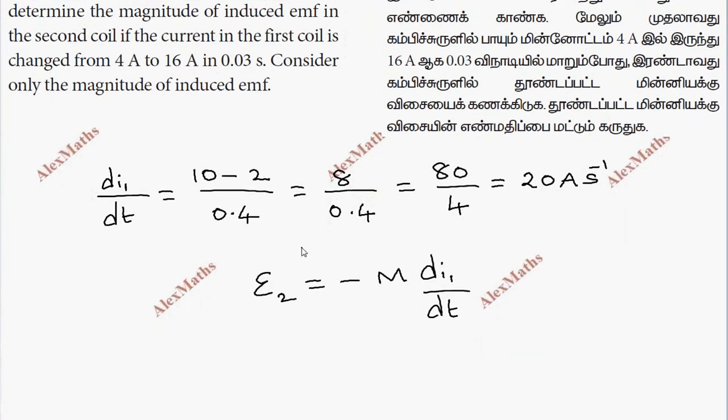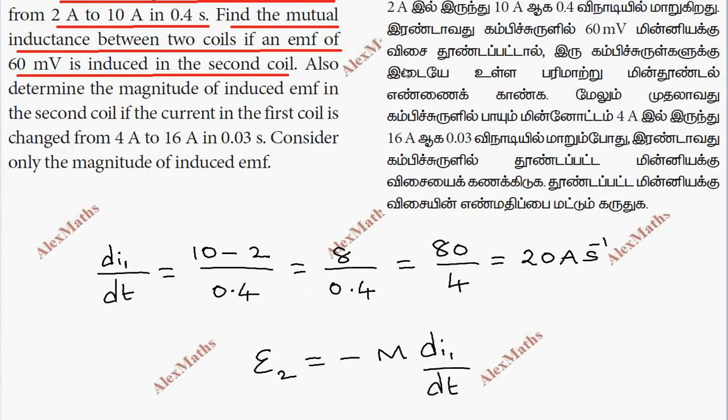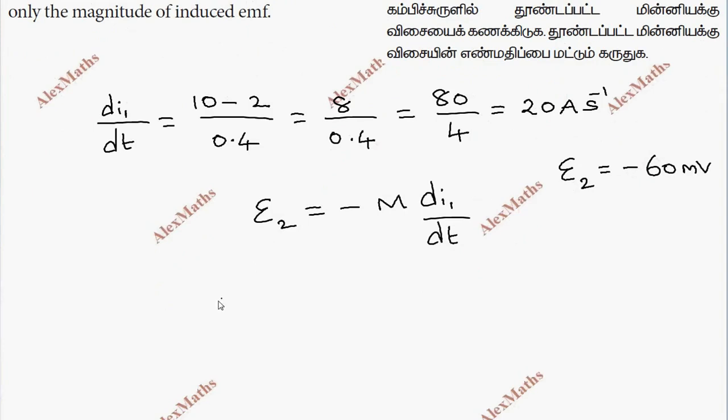Now, induced EMF is 60 millivolts. So, given value, this is minus 60 millivolts. This is negative. So, we will substitute this: minus 60 millivolts times 10 to the minus 3, and minus M. This is minus 20. We will have minus.